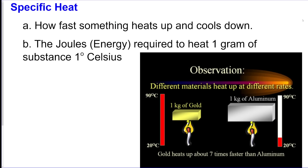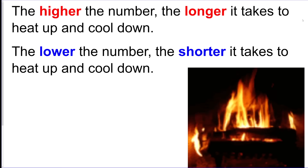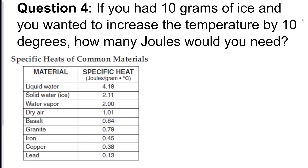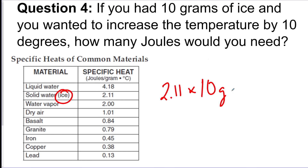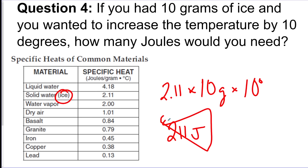Specific heat is how fast something heats up and cools down — it's the amount of energy required to heat one gram of a substance one degree Celsius. The higher the number, the longer it takes to heat up and cool down. Example: if you have 10 grams of ice and want to increase the temperature by 10 degrees, you do 2.11 times 10 grams times 10 degrees, which gives you 211 joules — just multiply everything.